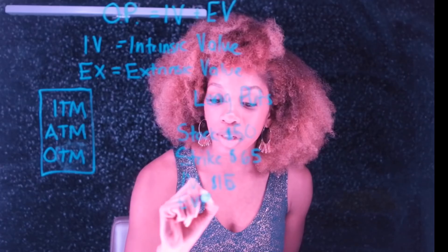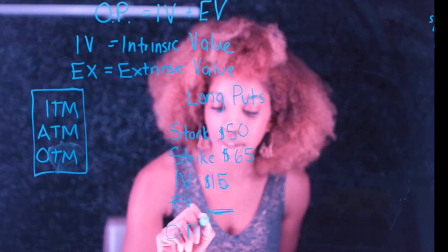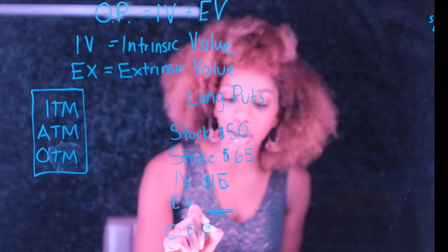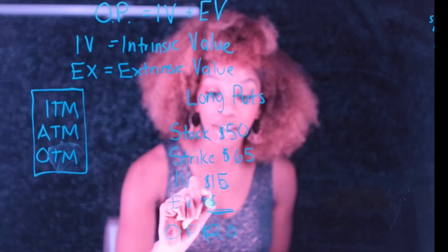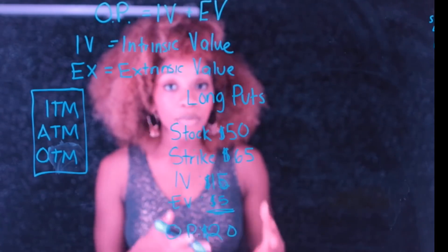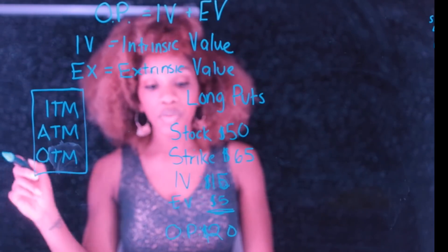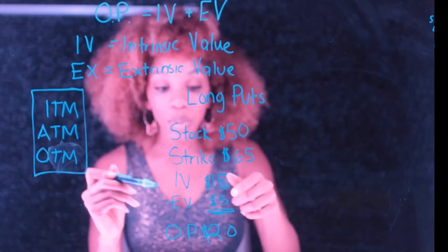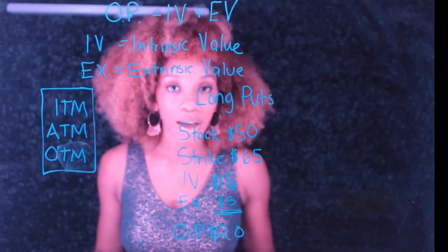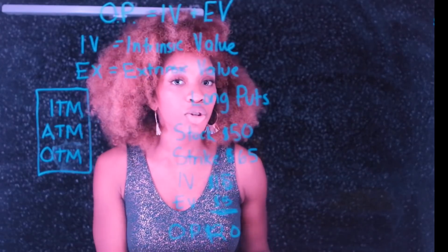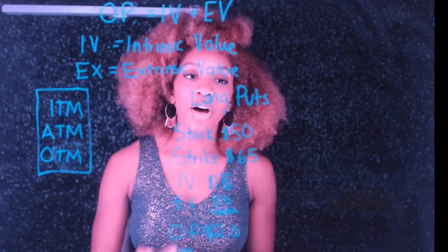But there's another component, which is the EV. If you add the IV plus the EV, you get the options price. Let's say the options price is trading at $20 — that means the EV is $5, so the time value in this long put contract is $5. When we start talking about short options, the only thing that's really important is the EV, because you want the contract for the long position to be worthless. Short options take the opposite position of long options.